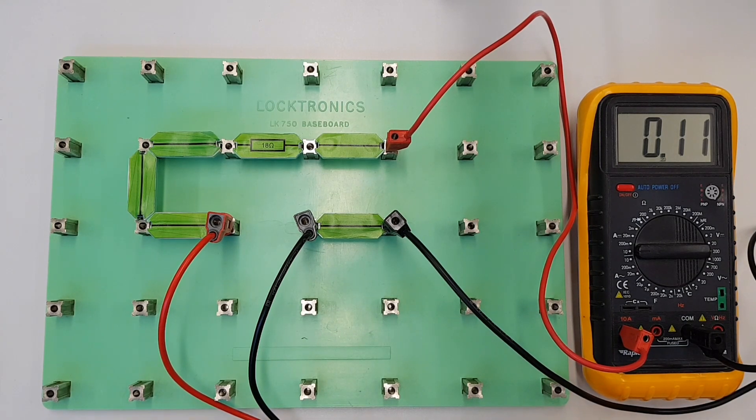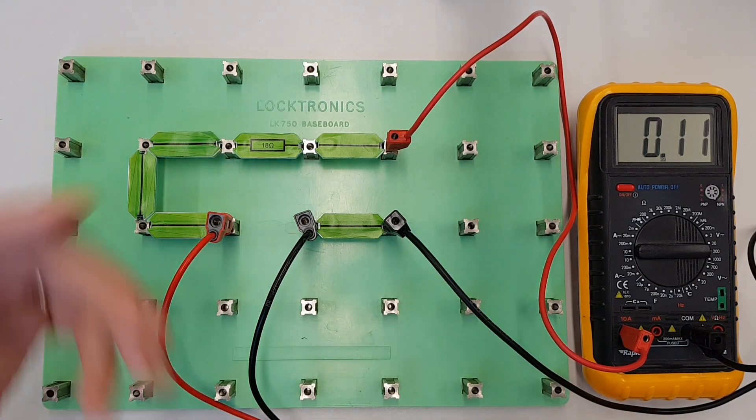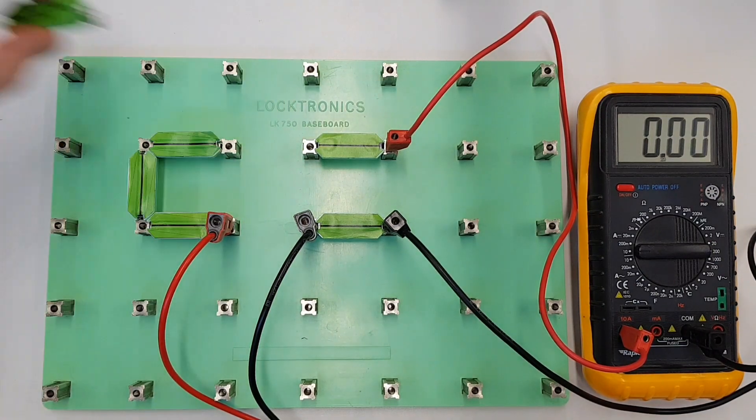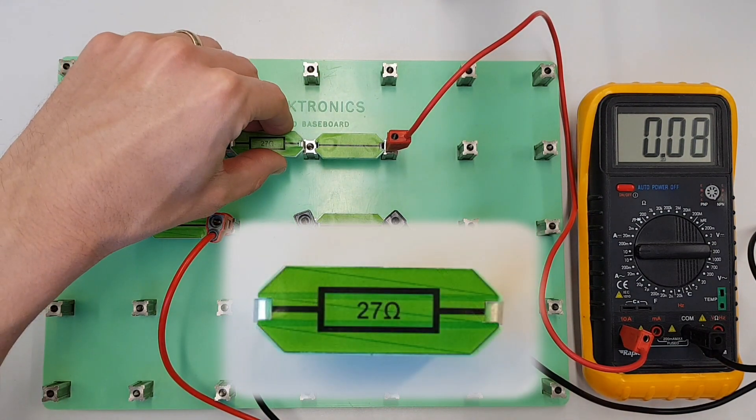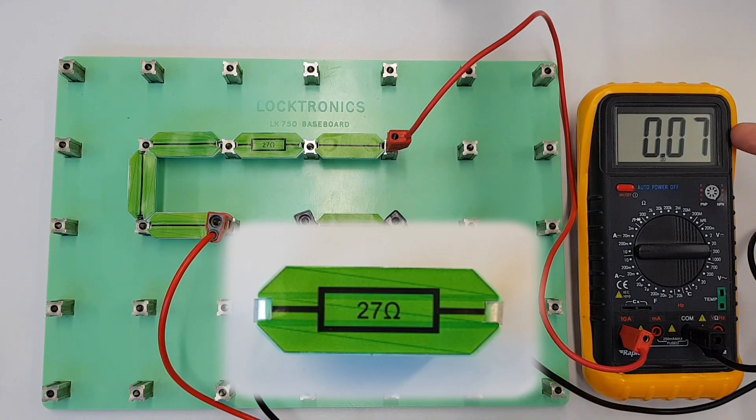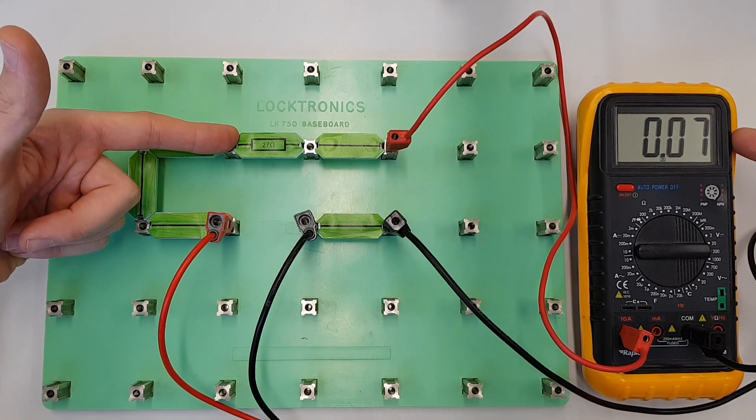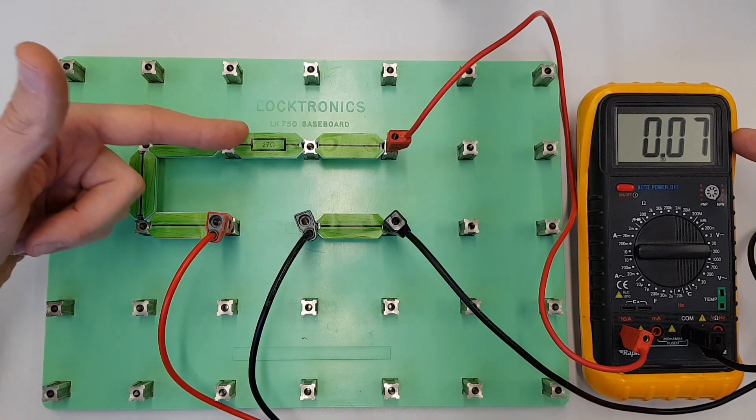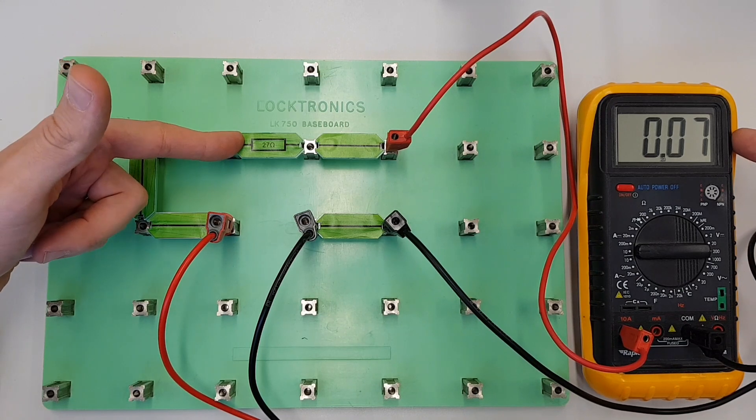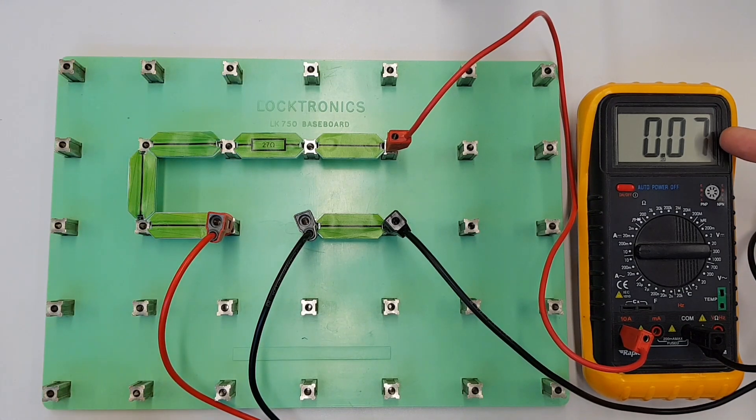Now let's move back and have a quick look at a slightly different value of resistor. So we're going to remove our 18 ohm resistor and in its place we're going to put a 27 ohm resistor and look at that, we've increased the resistance again and once again the current has dropped down. So by increasing the resistance in the circuit we can see that the current is decreasing.